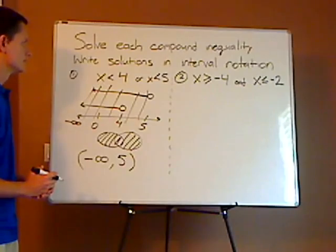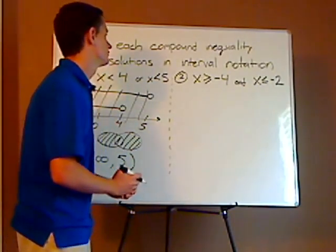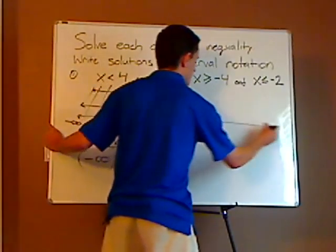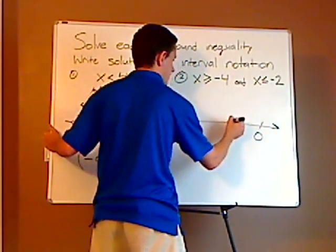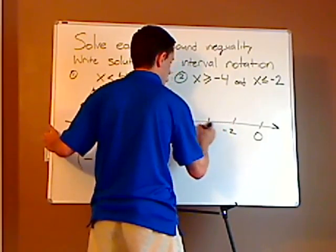Alright, let's look at the second problem. The second problem is an and statement. So first, do your number line. You have 0, and then you're going to have negative 2, and then negative 4.